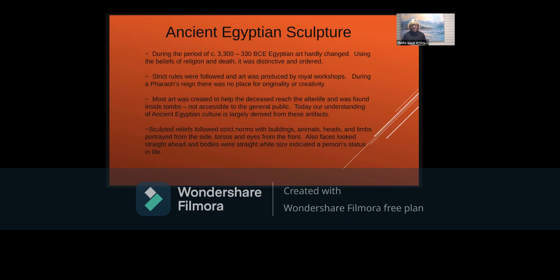What we understand of ancient Egyptian culture today is largely derived from these very private artifacts. Sculptured items had strict norms: animal heads and limbs were always portrayed from the side, while torsos and eyes were shown from the front, giving them a somewhat awkward look. All faces look straight ahead, bodies were straight, and size indicated a person's status in life.